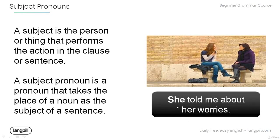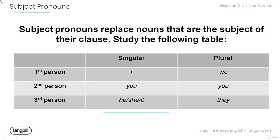For example, in this sentence we have: 'She told me about her worries.' The word 'she' is a pronoun and it is the subject of the sentence, and so the word 'she' is a subject pronoun.